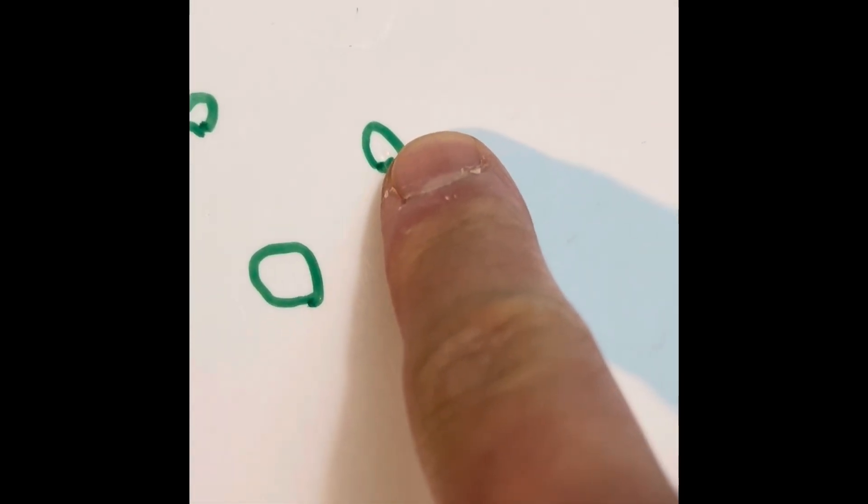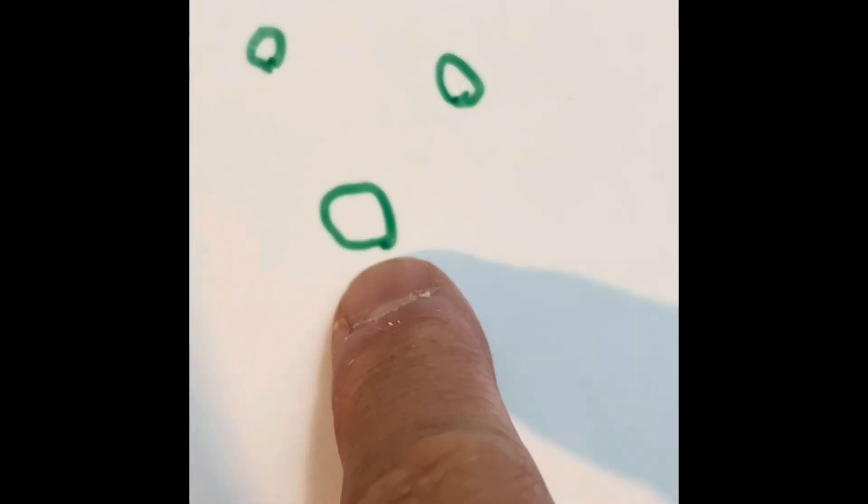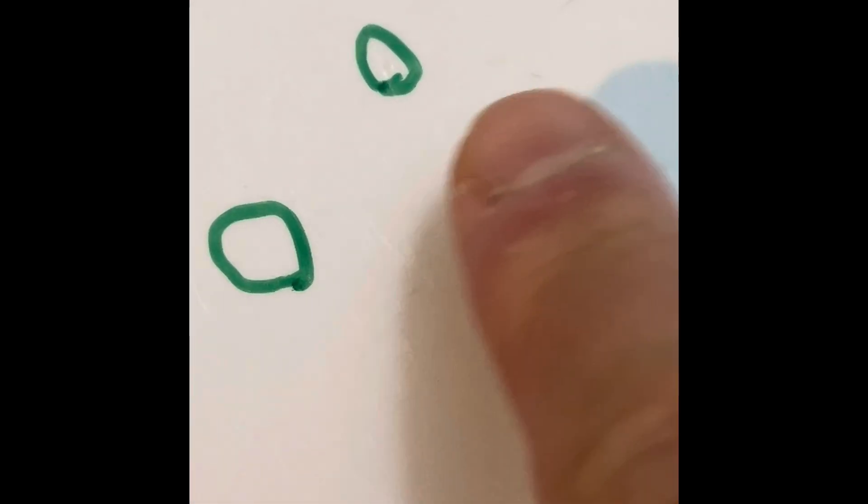So here we have a stadium and I already marked these because as you can see there's some denting damage here. This one's hard to see. I don't know if you can see that, but this one you can definitely see it.